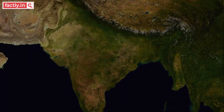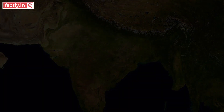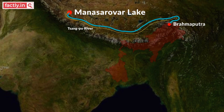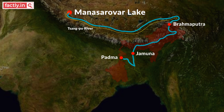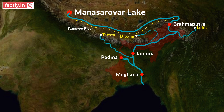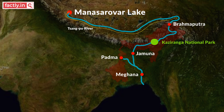Brahmaputra is a transboundary river that flows through China, India, and Bangladesh. It originates near Mansarovar Lake in the Himalayas and flows east through Tibet, where it is known as Tsangpo River. It enters India through Arunachal Pradesh, where it is referred to as Brahmaputra. Continuing its flow through Assam, it enters Bangladesh. Here, a distributary of Brahmaputra known as Jamuna joins the Padma. Another distributary joins downstream and the river is referred to as Meghna, which then flows into the Bay of Bengal. It has a total length of 2,899 km, of which only 916 km is in India. Dibang, Lohit, and Tista are major tributaries of Brahmaputra in India. Floods during the rainy season are a regular feature of Brahmaputra, creating havoc in multiple states, especially Assam. The famous Kaziranga National Park is situated near Brahmaputra.